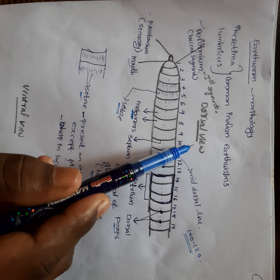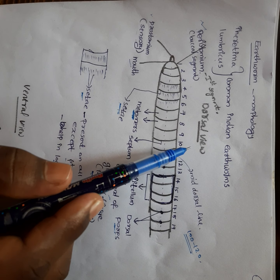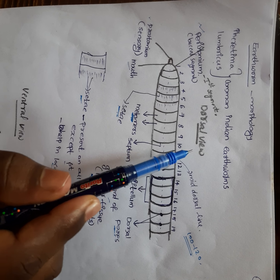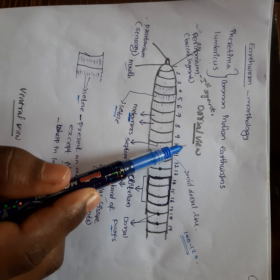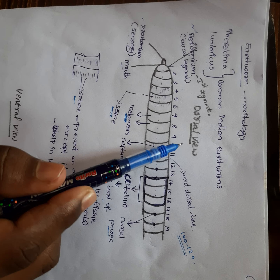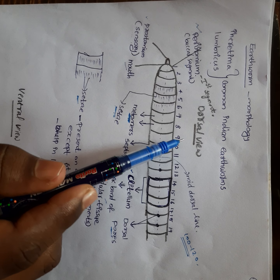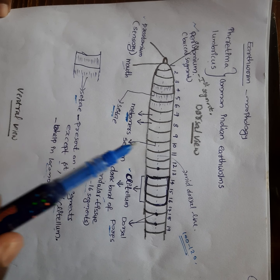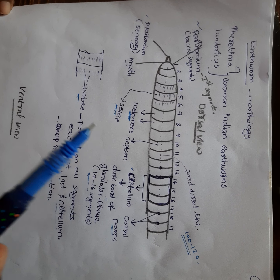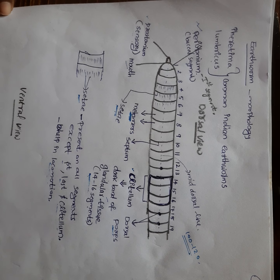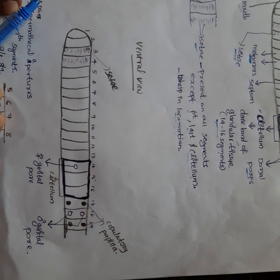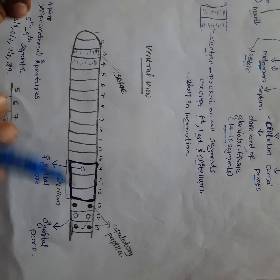What do you mean by dorsal view? Here we took the dorsal view, which means the view from the upper side. Ventral view means the view from the lower side. Next, I am taking the ventral view of earthworm.